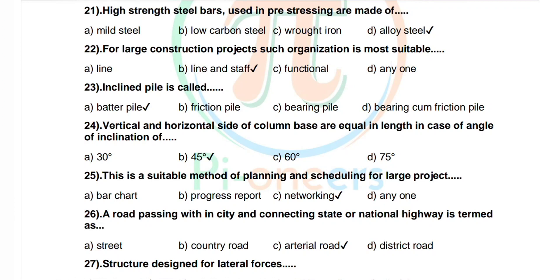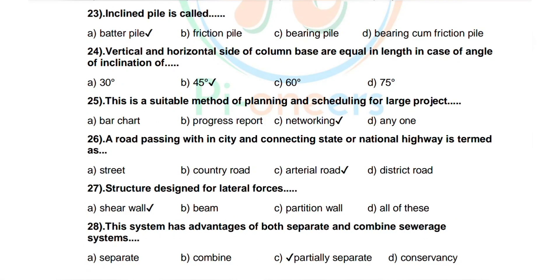Question 26: A road passing within a city and connecting state or national highway is termed as. Options: street, country road, arterial road, district road. Correct answer is arterial road. Question 27: A structure designed for lateral forces. Options: shear wall, beam, partition wall, all of these. Correct answer is shear wall.